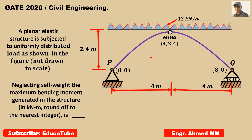If we look at the figure, we can see there is a point — the vertex — and its coordinates are 4 and 2.4, because from this point it is 4 meters in the x direction and 2.4 meters in the y direction. So the vertex is (4, 2.4). Also, this distance is 8 meters, so if one support is at (0, 0), the other support is at (8, 0).